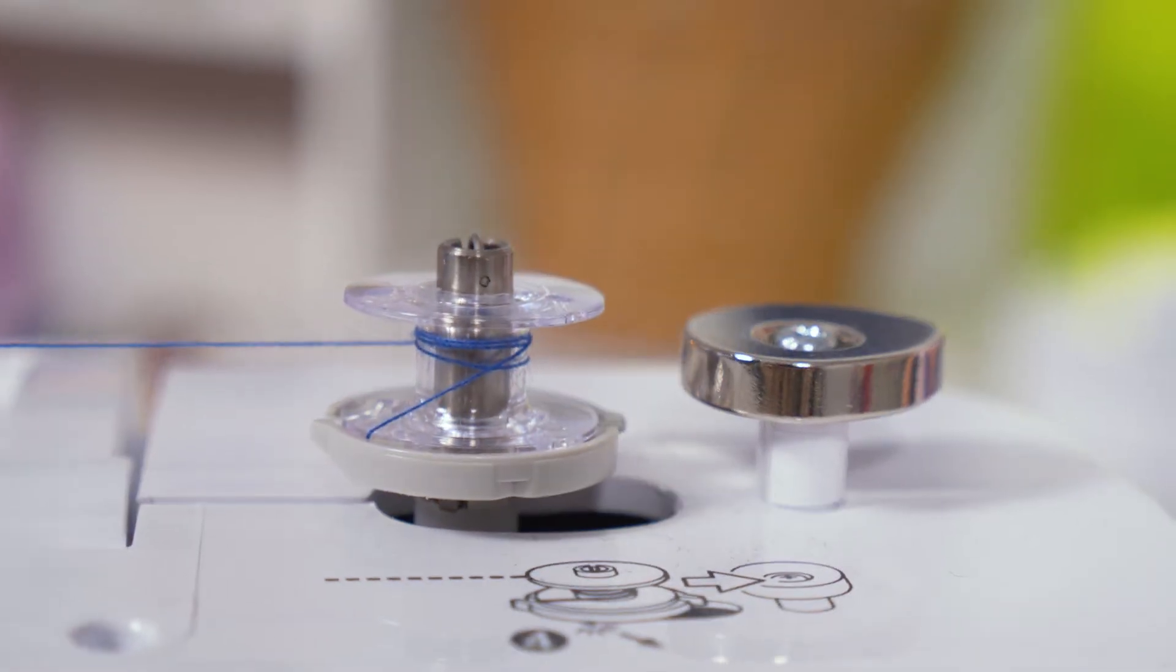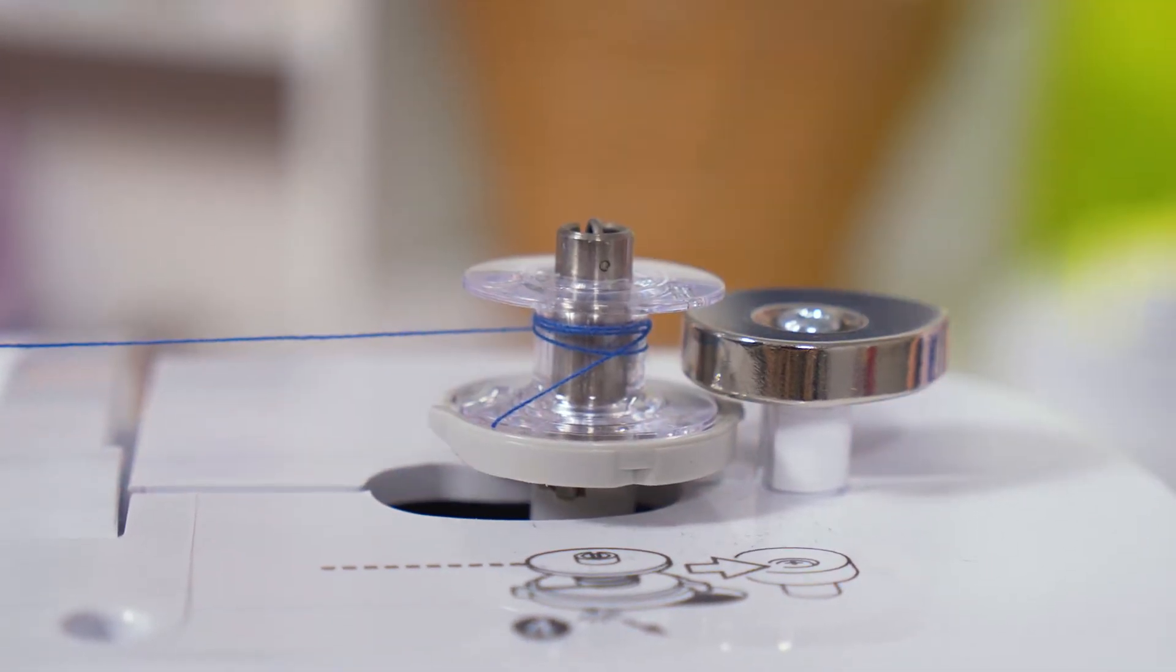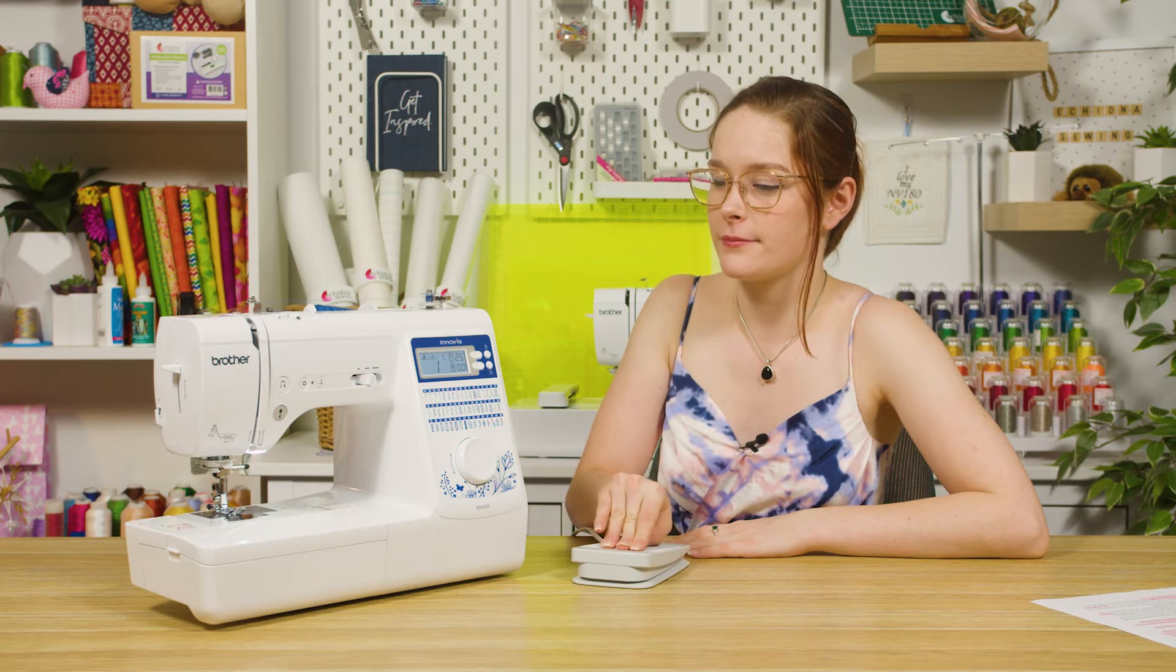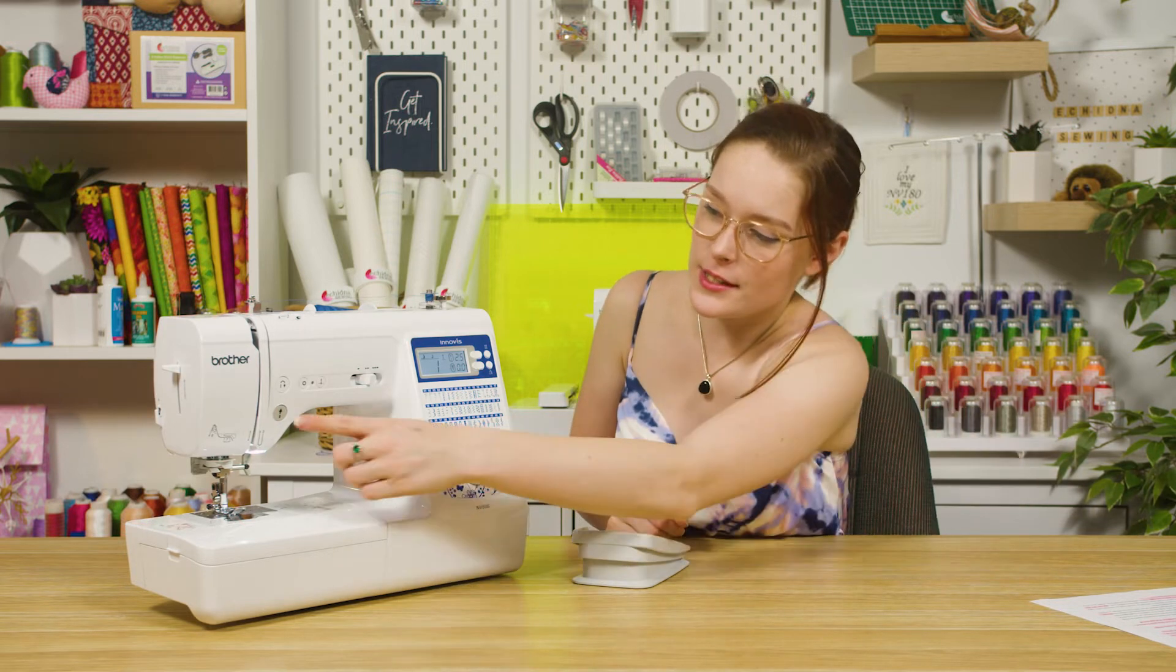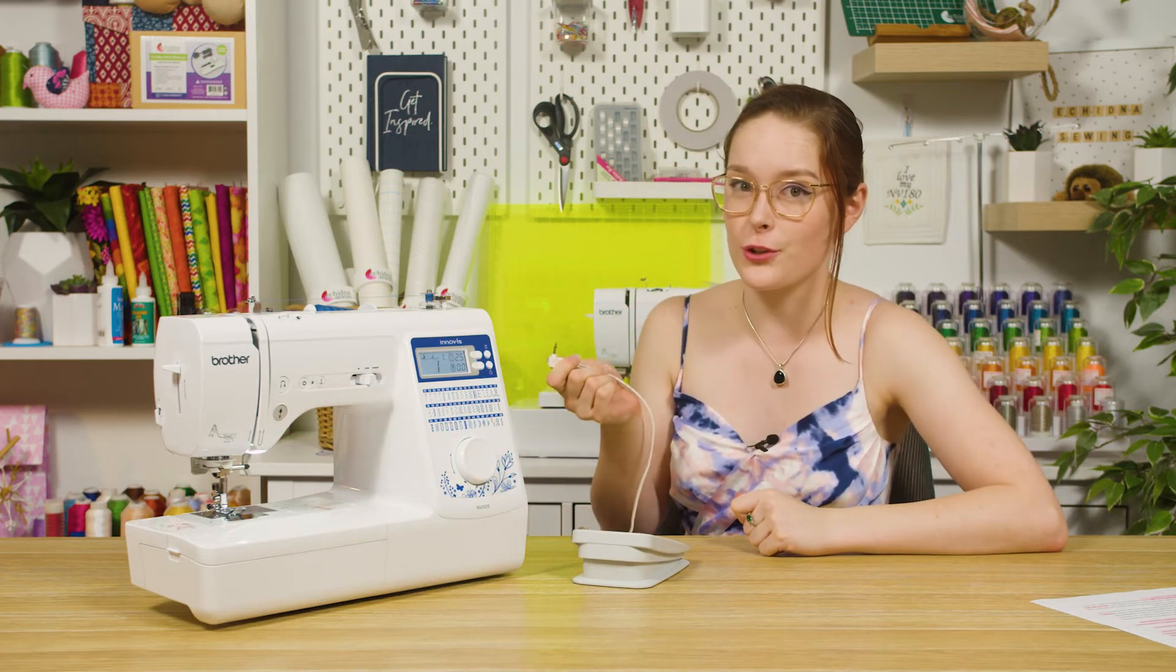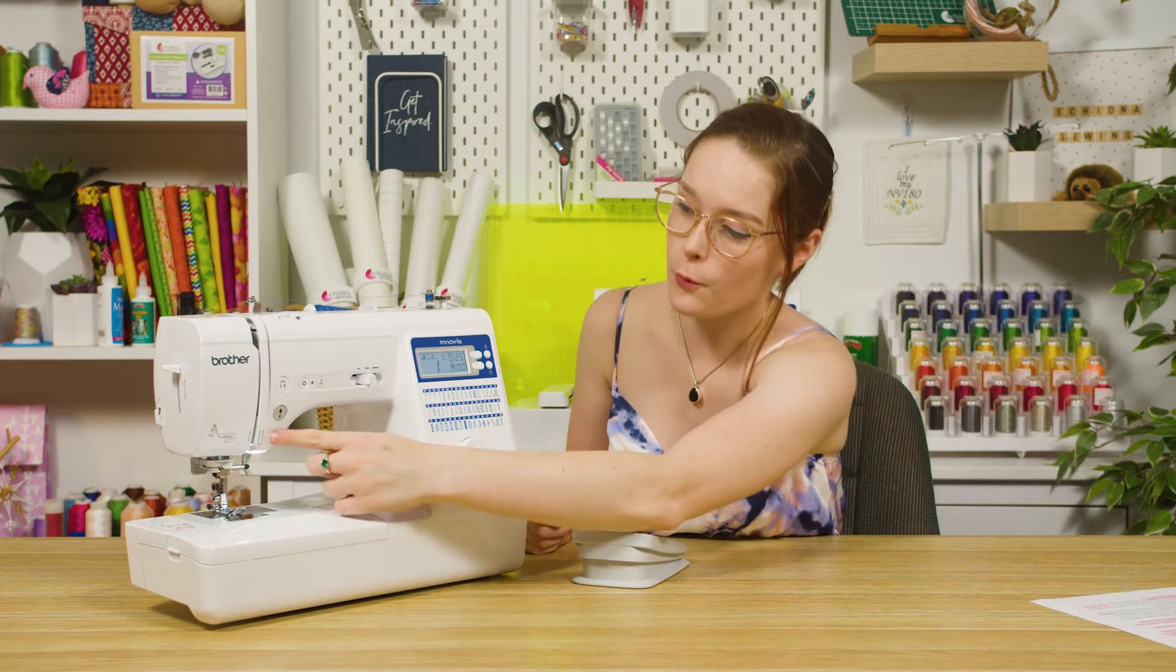Push your bobbin winder to the right so that the machine switches to bobbin winding mode. Now you can use the foot control to wind your bobbin. You can also use the start-stop button here to wind it automatically. Make sure your foot control is unplugged before you do so, otherwise your start-stop button won't work.